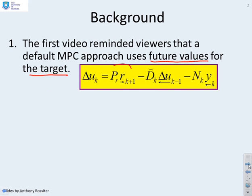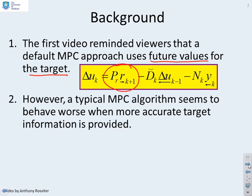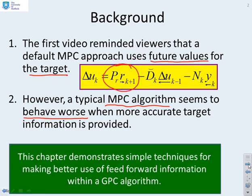You can see a typical GPC control law here, and there's the term PR times RFuture, which shows how future target values affect the current choice of input. However, what we've also shown is that a typical MPC algorithm seems to behave worse when you include this future information, which seems counterintuitive because if we can anticipate we should be able to do better, and yet GPC is doing worse.